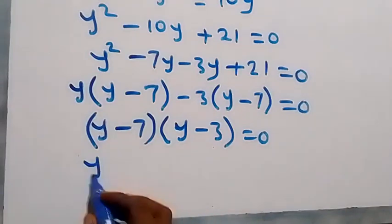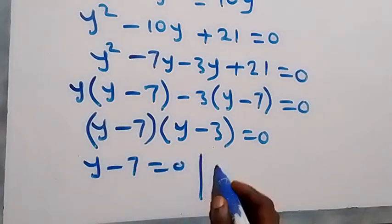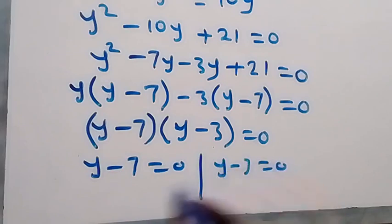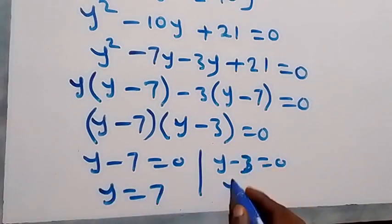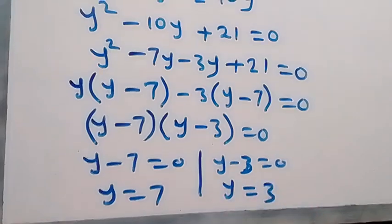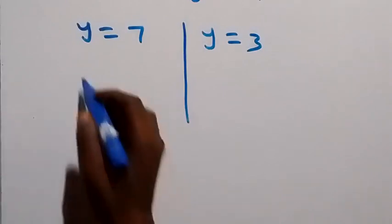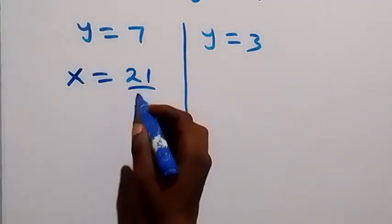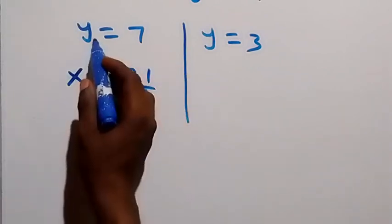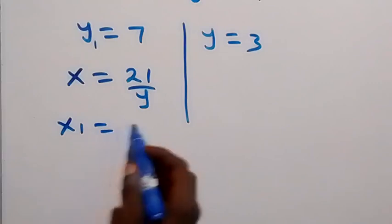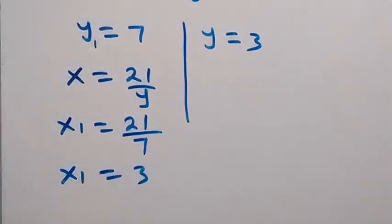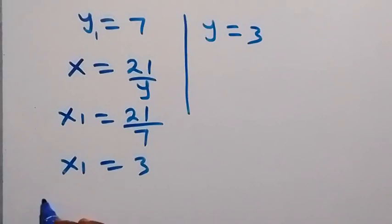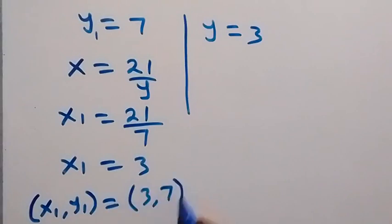From here, (y minus 7) is common — we take it out, giving (y minus 7)(y minus 3) equals to 0. The two cases are y minus 7 equals 0 or y minus 3 equals 0, so y equals 7 or y equals 3. For x, using equation 3: x1 equals 21 over y1, which is 21 over 7, so x1 equals 3. The first solution is (x1, y1) equals (3, 7).